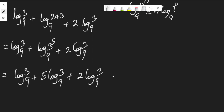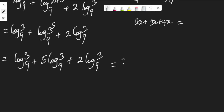Each of the log terms here is log 3 to base 9, which means we can add them. Just like saying 2s plus 3s plus 4s — since all terms are in s, we can add them up. So we have 1 plus 5 plus 2, which gives us 8 log 3 to base 9.